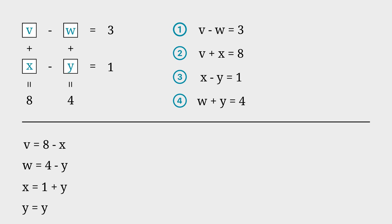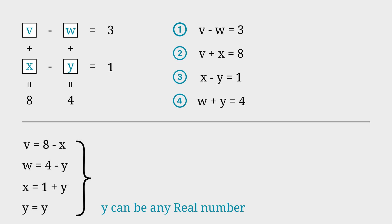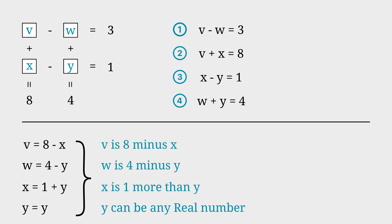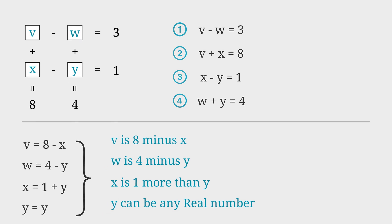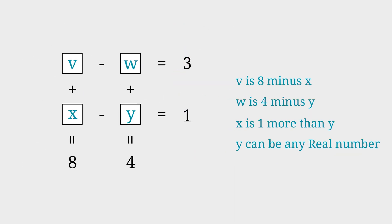So now you have a new set of rules, and we can complete the puzzle. Y equals Y means that Y can be any real number. X is equal to 1 plus Y, meaning X is 1 more than Y. W is equal to 4 minus Y, and V is equal to 8 minus X. This means there are multiple solutions to this puzzle — that's why the solution is so neat.